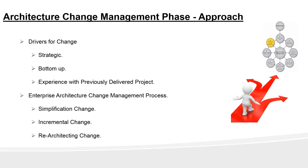A simplification change is handled via change management techniques and is usually driven to reduce investment. For example, changes at the infrastructure level — say 10 systems reduced or changed to one system. This may not change the architecture above the physical layer, but it will change the baseline description of the technology architecture. This is handled as a simplification change via change management technique.